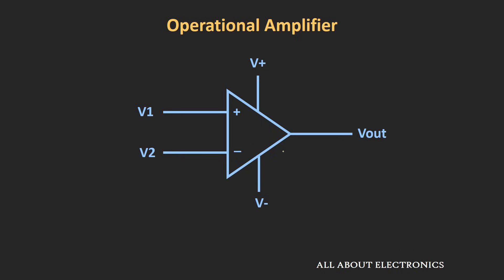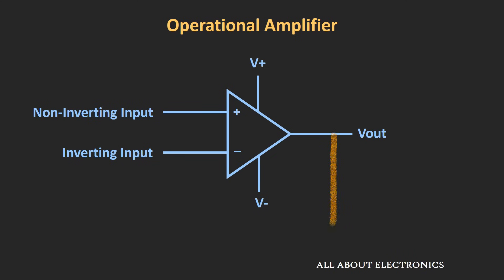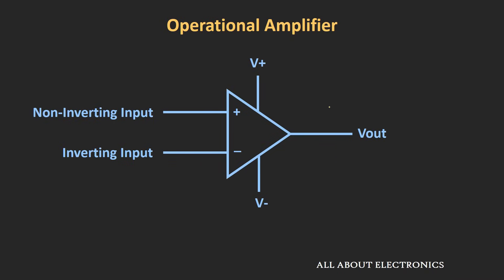There are two ways to apply this feedback. One is providing feedback from the output to the positive, non-inverting input terminal — this is known as positive feedback, because a fraction of the output voltage gets added to the non-inverting input. However, positive feedback leads the system into instability, so we cannot use it alone. To control the gain of the op-amp, we need to go for negative feedback — that means feeding a fraction of the output voltage to the inverting input terminal.